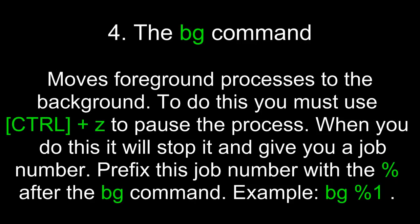The BG command moves foreground processes to the background. To do this, you must first pause the process with Control+Z. When you do this, it will stop the process and give you a job number. Prefix this job number with the percent symbol after the BG command. For example, 'BG %1' would launch that particular job ID process in the background.